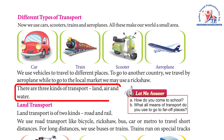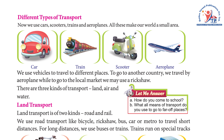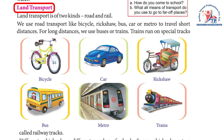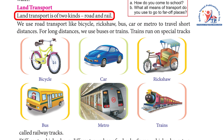There are three kinds of transport: land, air, and water. Activity: How do you come to school? What means of transport do you use to go to faraway places? Land transport is of two kinds: road and rail.